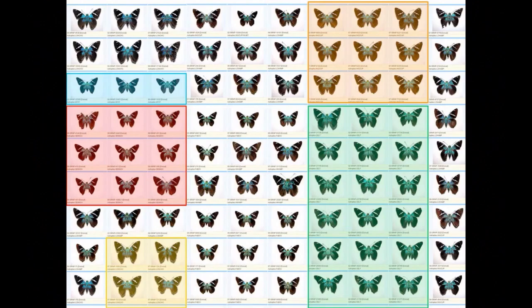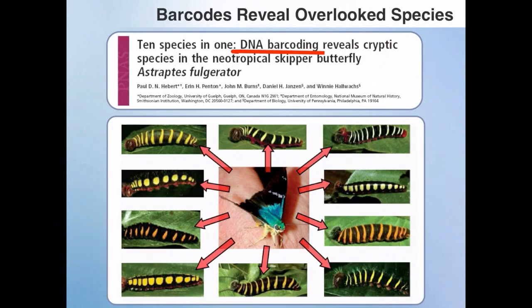This is a big problem, because there's a lot of information that gets missed when we are grouping things together just because of the way they look, when in fact they are different species. An example of this problem, relating to the same butterfly, was described in a very famous paper that came out several years ago, where they discovered, based on DNA barcodes, that there were actually 10 species of this particular skipper butterfly that had been overlooked. When they barcoded it, it clustered very differently, and when they looked at the caterpillars and the food plants they were eating, a lot of information had been lost because we assumed they were all the same.